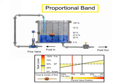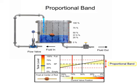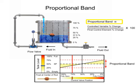Proportional band is defined as the percentage of change in the controlled variable which causes the final control element to go through 100% of its operating range. Proportional band is calculated by dividing the controlled variable percent change by the final control element percent change, multiplied by 100.